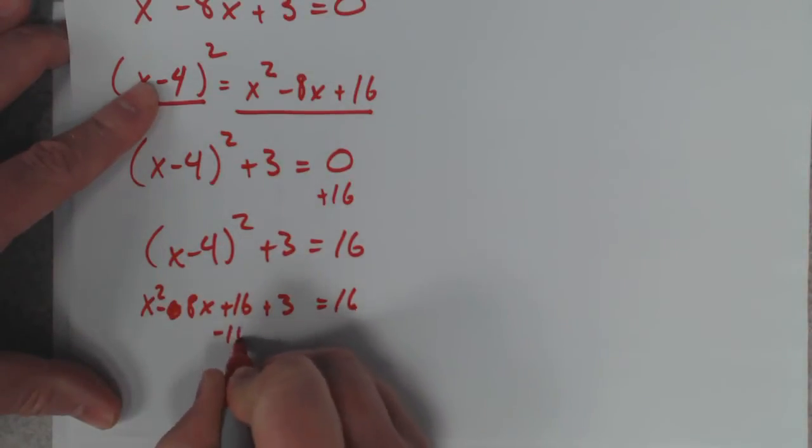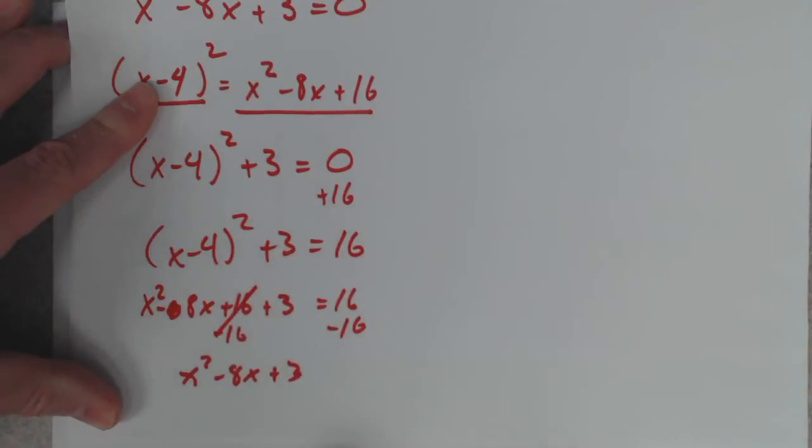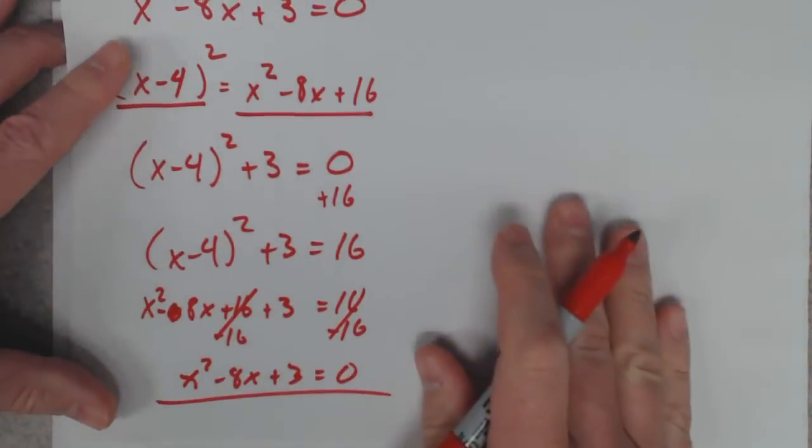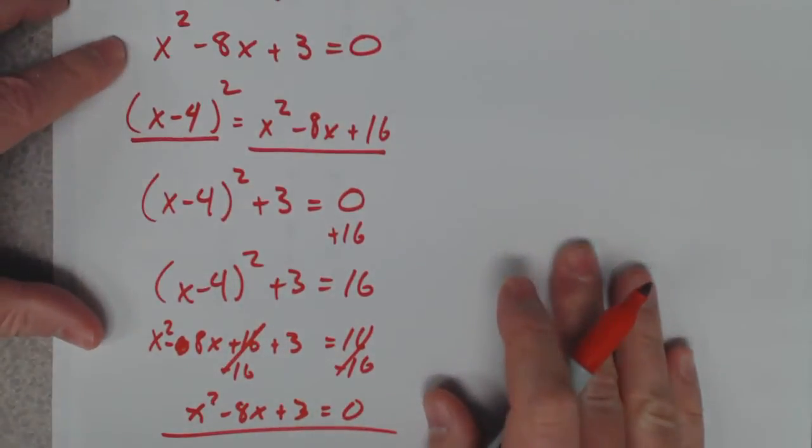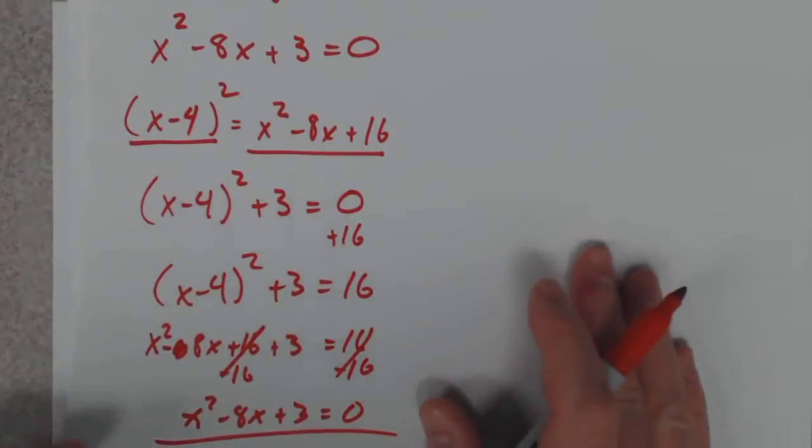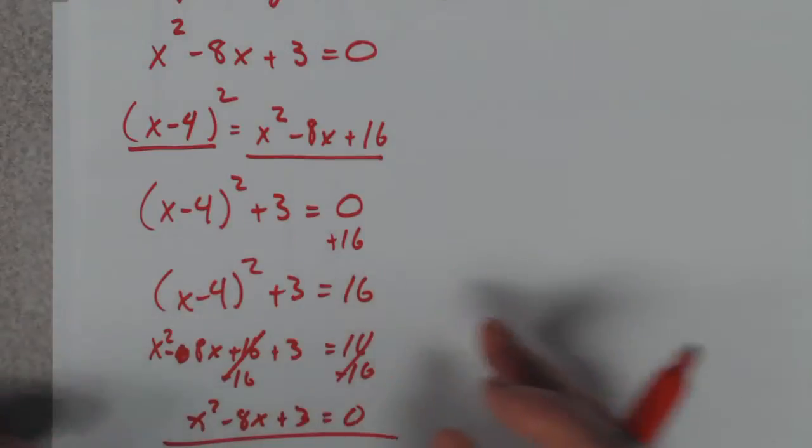If I subtract 16 away, it would be x squared minus 8x plus 3 because that cancels to 0 equals 0. That's exactly what I started with right there. That's how you complete the square. That's how you use completing the square to rewrite an equation.